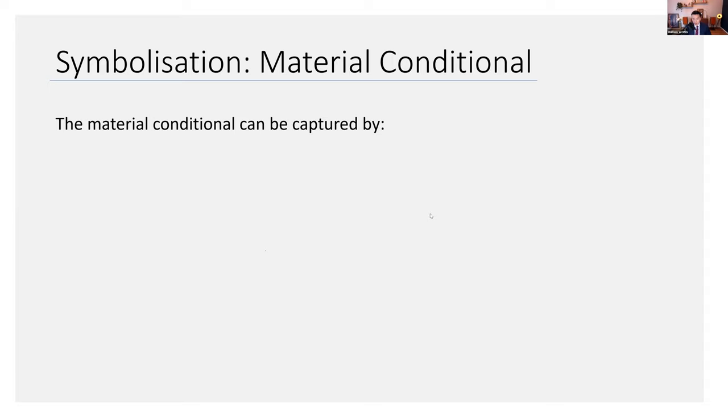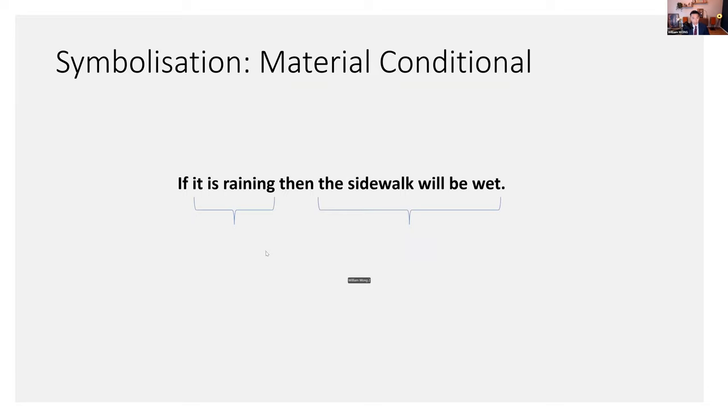Let's talk about the material conditional. The material conditional can be captured by this arrow thing. Sometimes it appears differently, as this thing. I think maths use this a lot. There are ASCII codes for this, so you can type this in your computer. If not, you can draw it out or copy and paste. In this course, we'll just stick with one. Just be consistent.